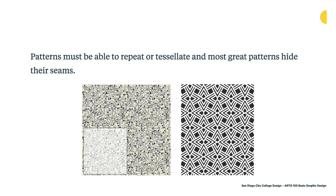Patterns must be able to repeat or tessellate, and most great patterns hide their seams. A good pattern can go on indefinitely — it has the ability to repeat no matter how complex or simple it is, to cover a very large area or a small area. On the left we're showing you the portion of the pattern with human-like characters, and then you can see how that same piece repeats four times to create the entire pattern. The one on the right with geometric triangular shapes also hides its seams, making it another great example of a tessellating pattern.